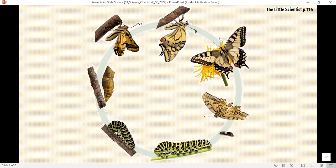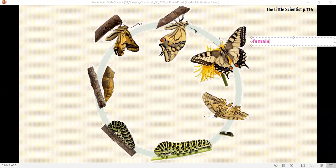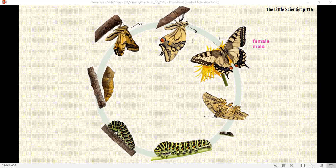Insects reproduce sexually by sexual reproduction. Both a female sex cell and a male sex cell are involved in the process. After fertilization, the female lays eggs on the leaves of plants. After a while, a larva hatches out of the eggs.